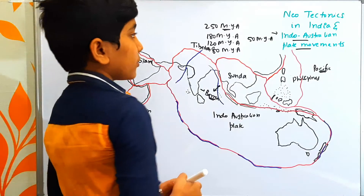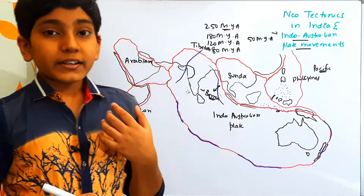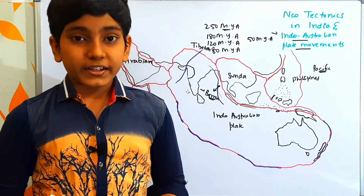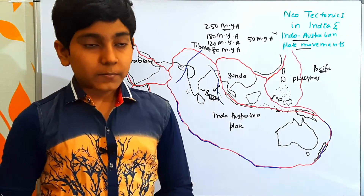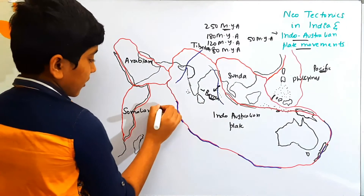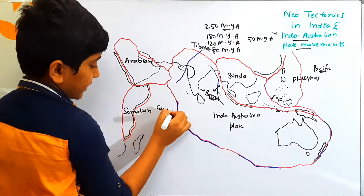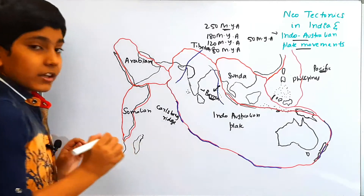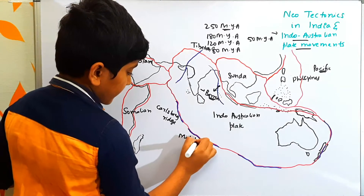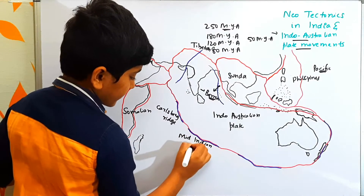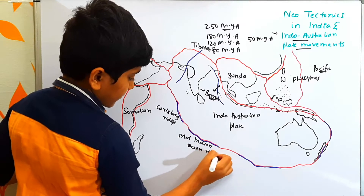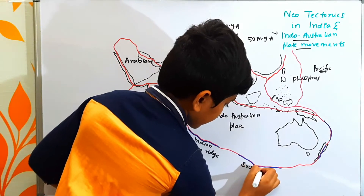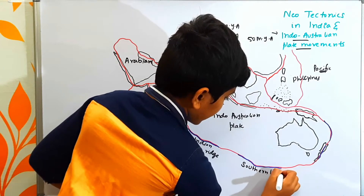Now let us come to the neotectonics. But first, it is also important to know about the oceanic ridges that were formed. This ridge is called the Carlsberg Ridge. Next, this is called the Mid-Indian Ocean Ridge. And here we have the Southern Indian Ocean Ridge.